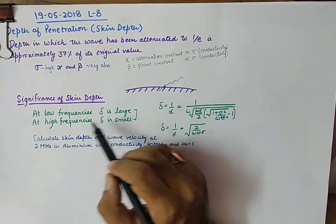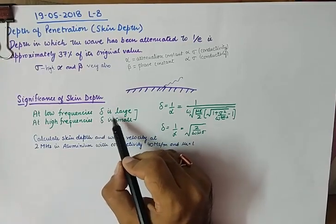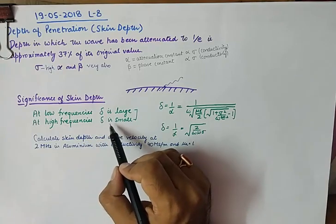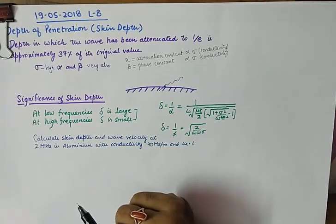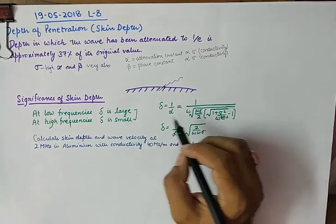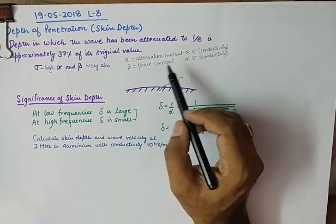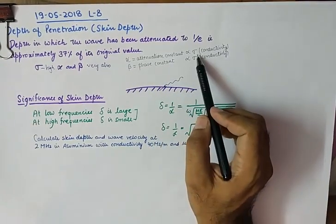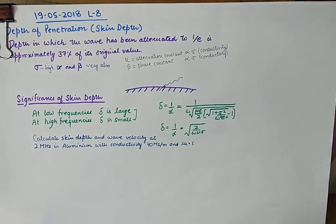And at low frequencies, the skin depth is large, and at high frequencies, skin depth is small. This is the second point that I'd like to discuss. The first point being the direct proportionality of alpha and beta to conductivity.